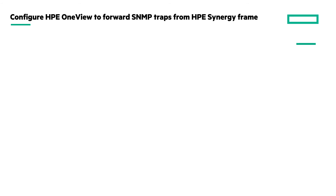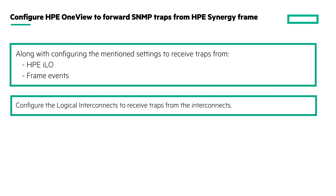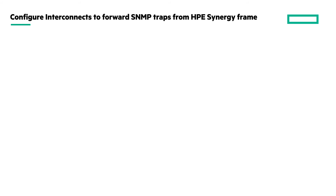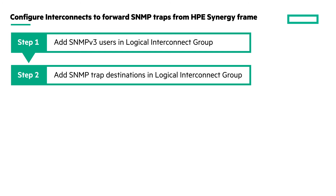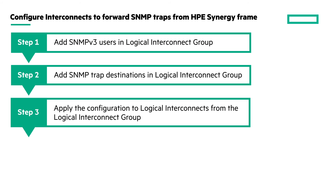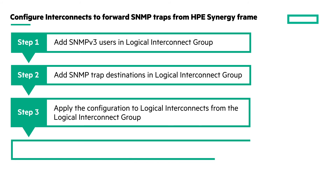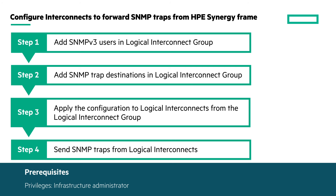For the Synergy version of HPE OneView, we have already demonstrated the configuration to receive traps from HPE iLO and for frame events. Apart from these configurations, you need to configure the logical interconnects to set the trap destination and receive traps from the interconnects. Here are the configuration steps: first, add SNMP V3 users to the logical interconnect group. Then, add your SNMP monitoring application IP address as the SNMP trap destination to the logical interconnect group. Apply the configuration of the logical interconnect group to all the logical interconnects in the group to make the resources consistent. After the configuration, verify that you are receiving the SNMP traps in your SNMP monitoring application by sending traps from the logical interconnects.